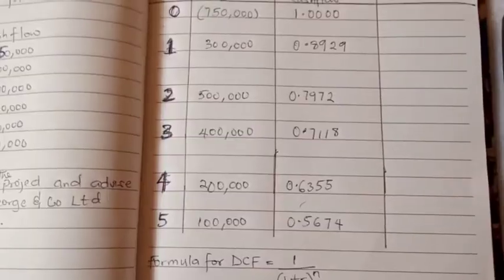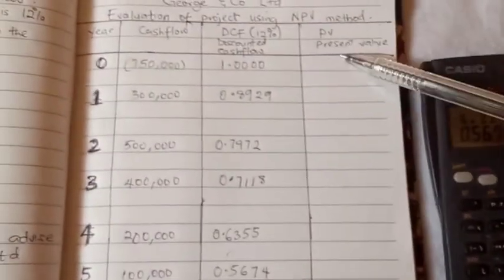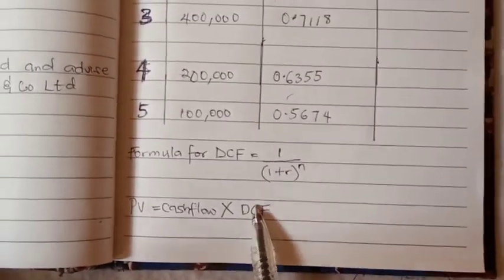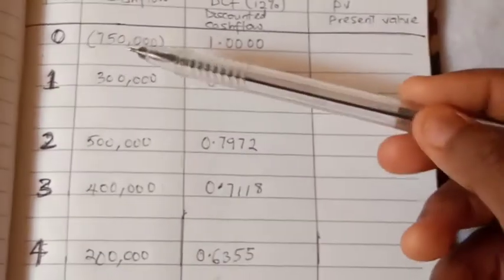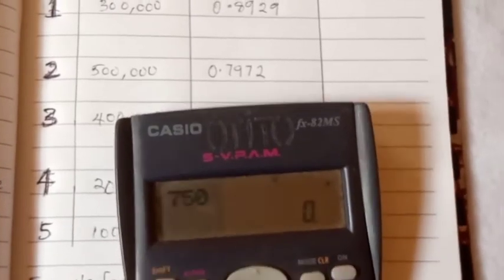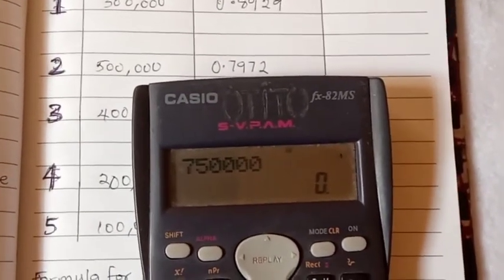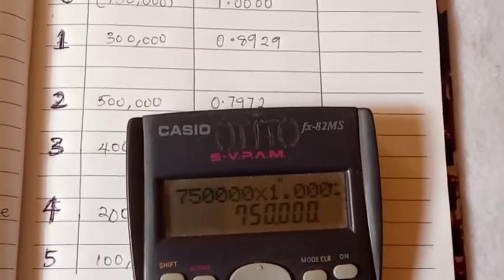Now I'm done calculating for the other years. We are going into calculating for the present value, and the formula is below here: cash flow times the discounted cash flow. So for each year, we multiply the cash flow with the discounted cash flow. So you bring your calculator and you multiply.